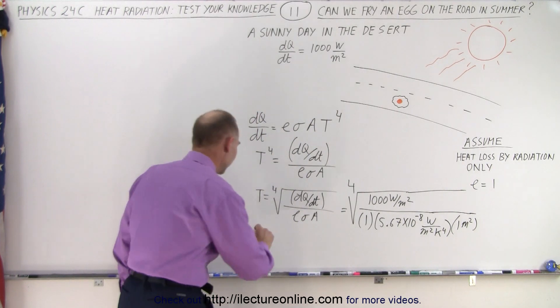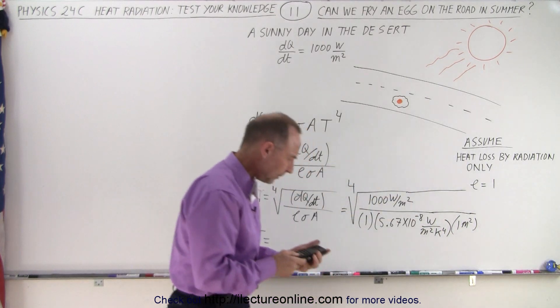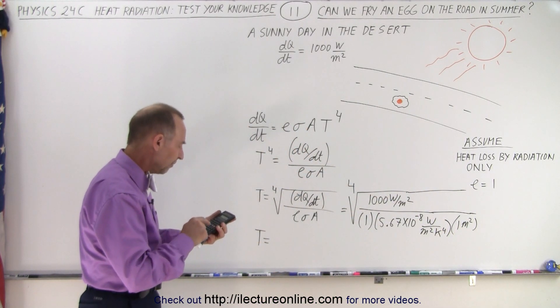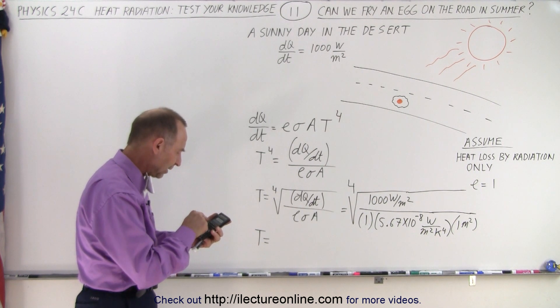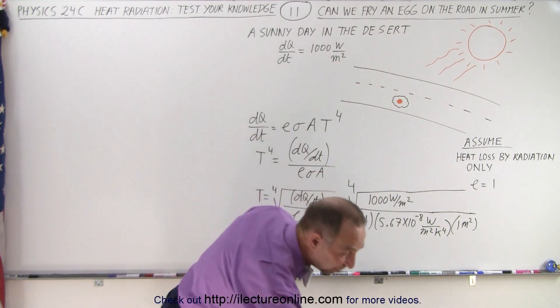There we go. And now we're ready to find the temperature of that road, and of course that will be in Kelvin. So let's see. We have 1,000 divided by 5.67 E minus 8. Now we take the square root and the square root again, and we end up with 364 Kelvin.